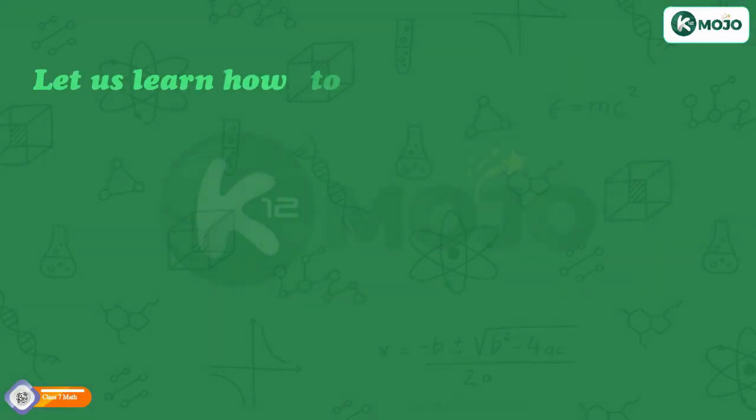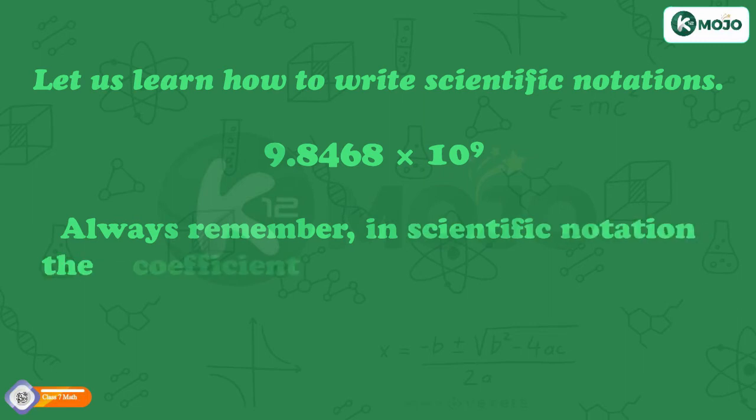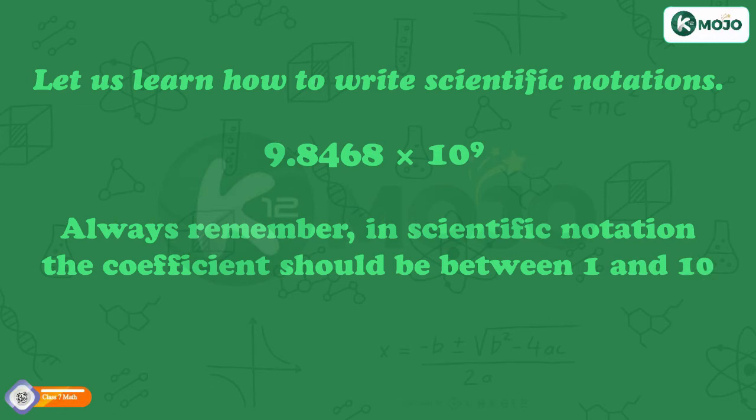Let us learn how to write Scientific Notations. 9.8468 into 10 raised to the power 9. Always remember, in Scientific Notation, the coefficient should be between 1 and 10 and the power should be an integer.